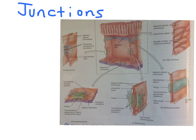Junctions are often formed between the plasma membranes of adjacent tissue cells. There are many different types of cell junctions, but the five most common ones in the human body are shown here in the diagram. These are the tight junctions, the adherence junctions, the desmosomes, the hemidesmosomes, and the gap junctions.